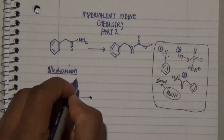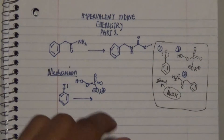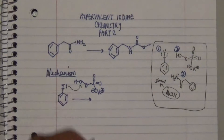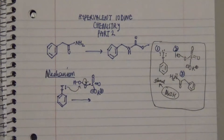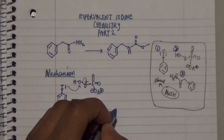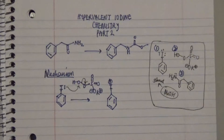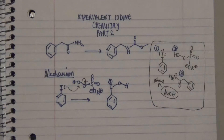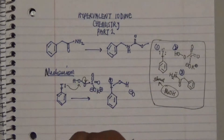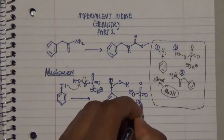Once number one reacts with number two, the lone pair attacks the oxygen, and this bonding pair becomes a lone pair on the oxygen, thereby generating a negative charge on that oxygen. What is also being formed is a positive charge on the iodide due to the loss of its lone pair. However, you're forming a hydroxyl attachment on the iodide, while on the other side there is a negative charge on the oxygen with the sulfur attached to it — all of this remains unchanged.